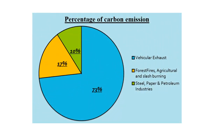What is the percentage of carbon emission? From this diagram it's very clear: the major part of carbon emission — 73% — comes from vehicular exhaust. Next, around 17% is from forest fires, agriculture, and slash burning. And 10% is related to the steel, paper, and petroleum industries.